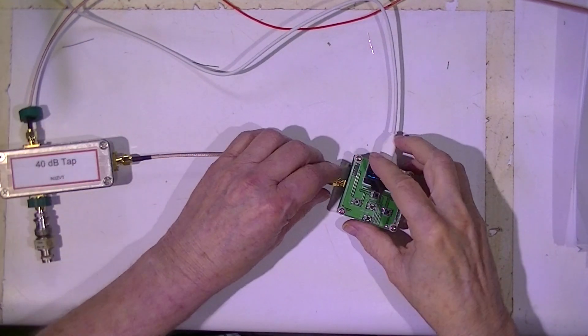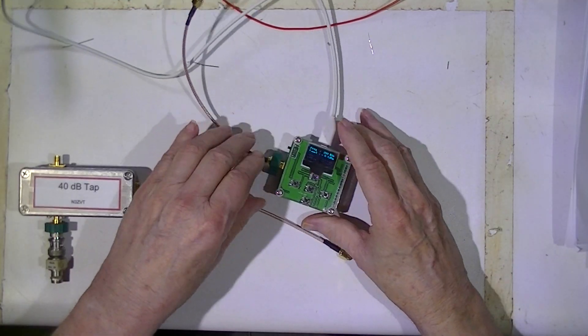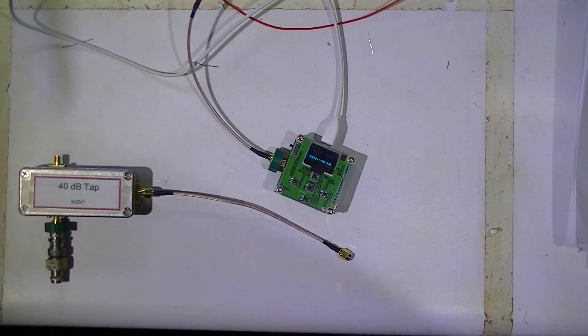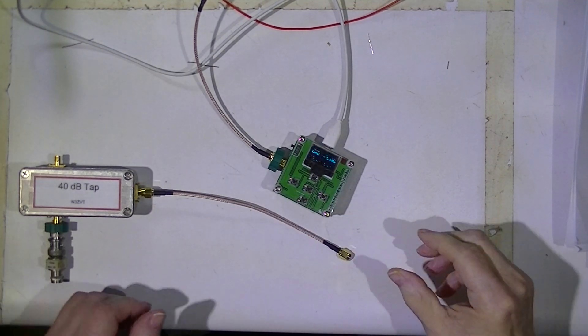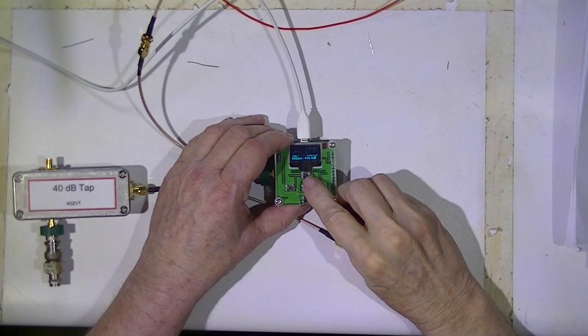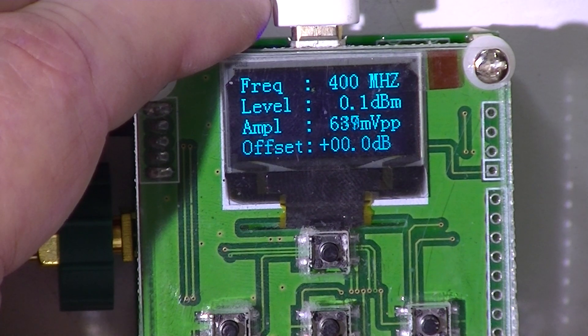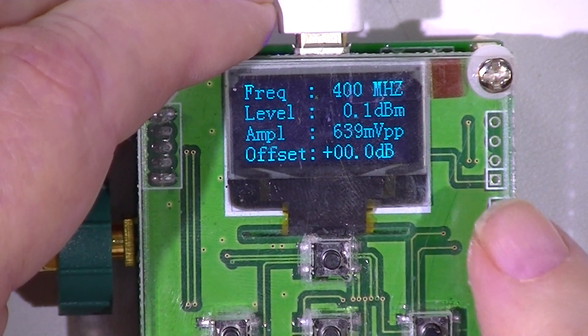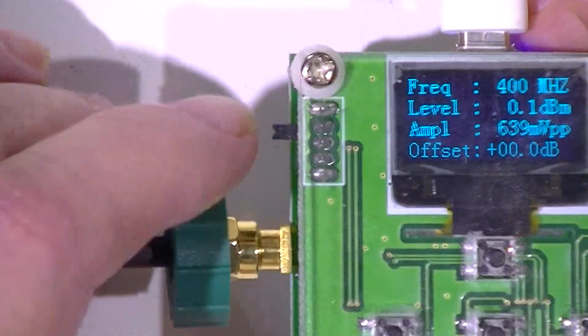Let me return the hookup. I'll change the signal generator to 400 megahertz. I'll reprogram the little wattmeter to 400. So there, it's reading about 0 dBm, 400 megahertz.